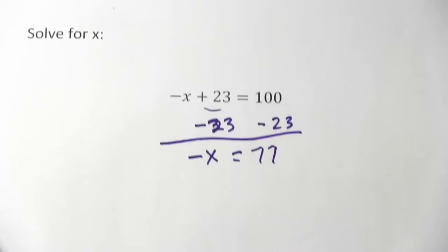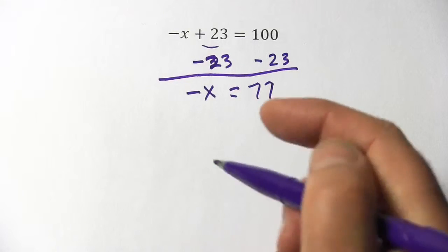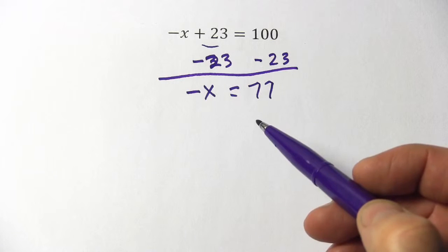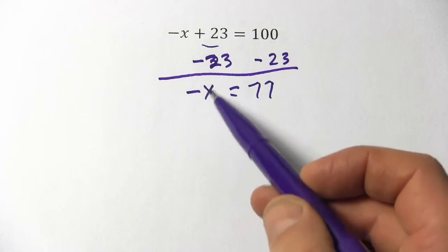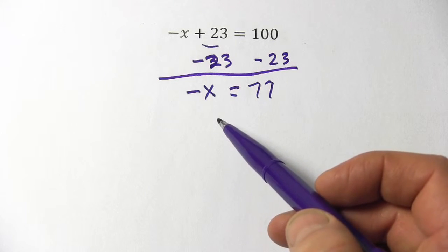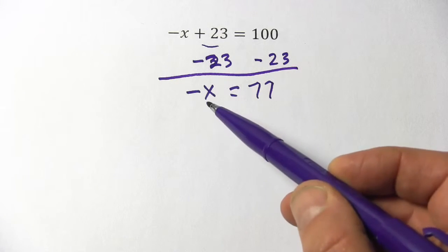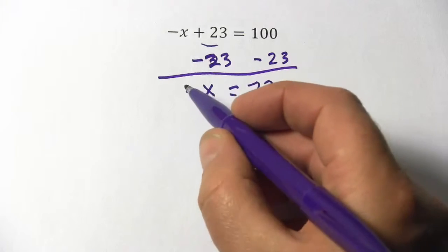But we're not done. This does not say x equals 77, it says negative x equals 77. So what do we do when we have just a negative x over here? Well one thing to keep in mind is that a negative times a negative is a positive and that's what we want, is a positive x.